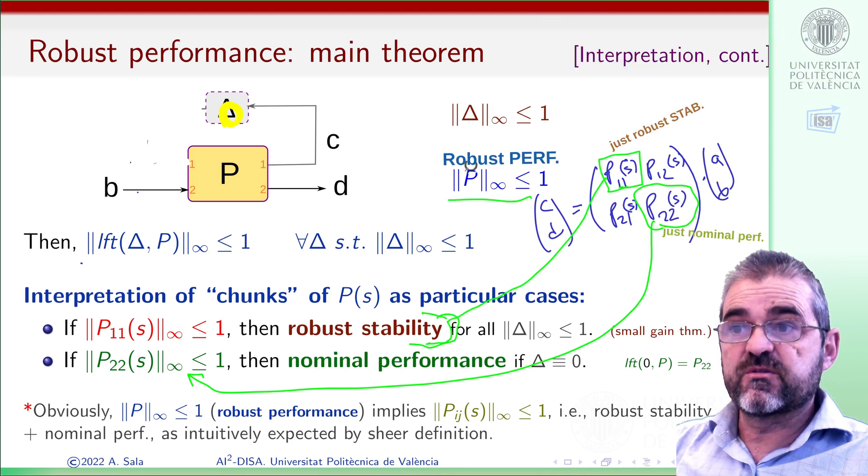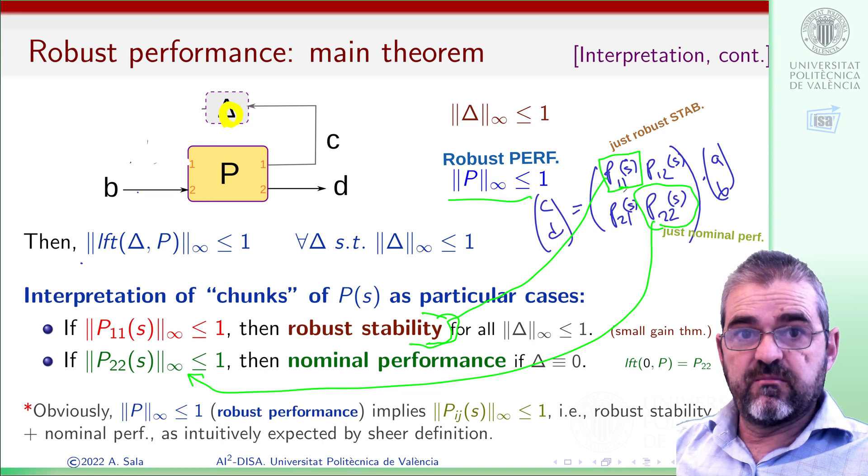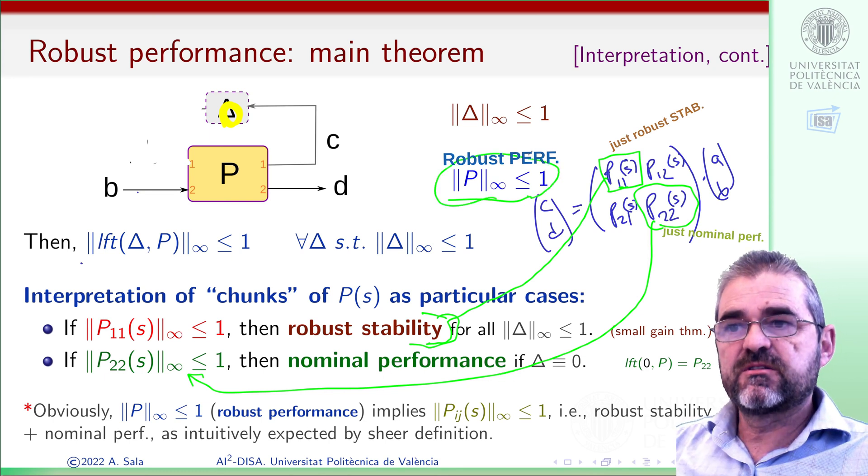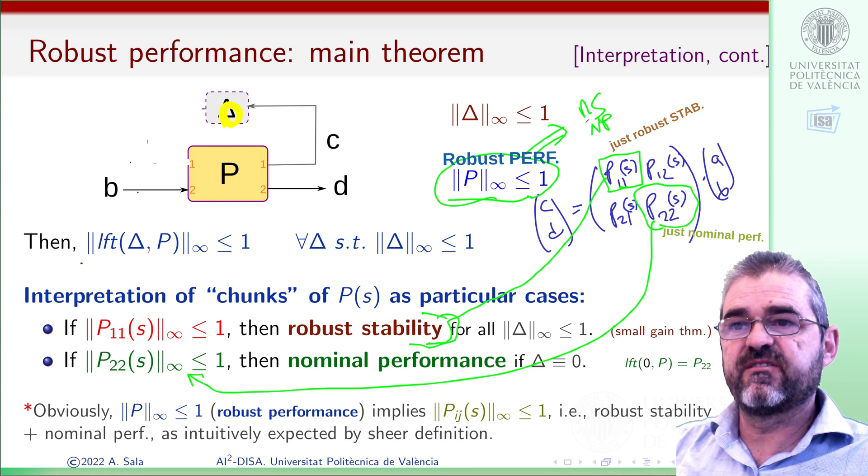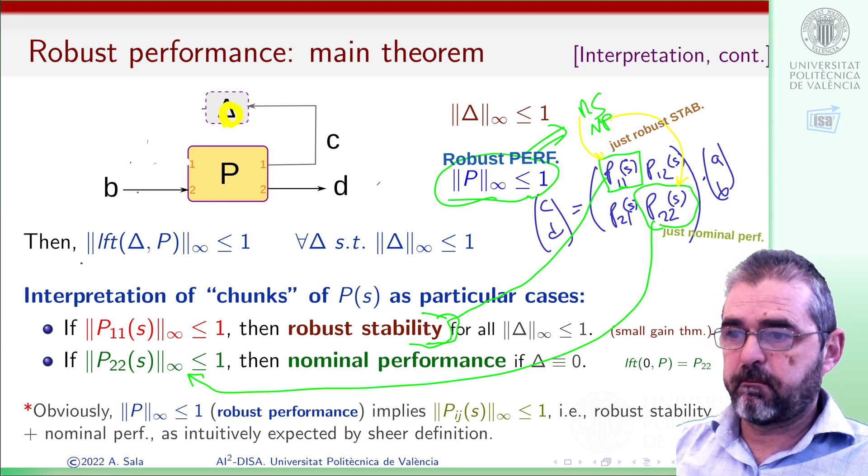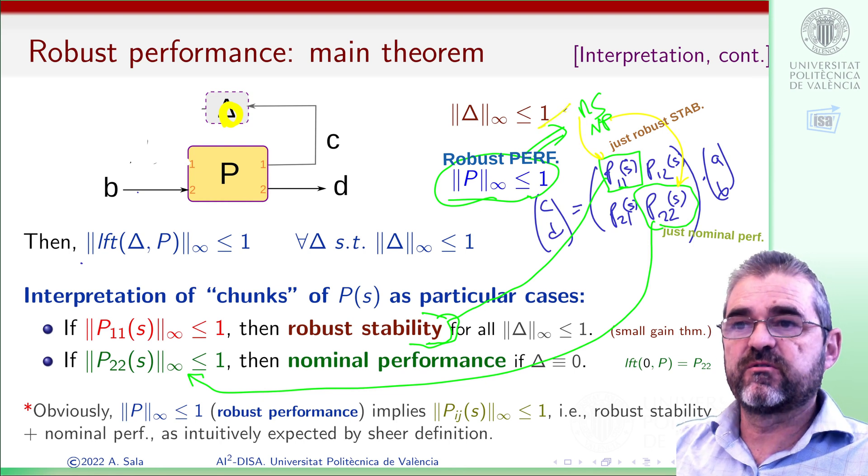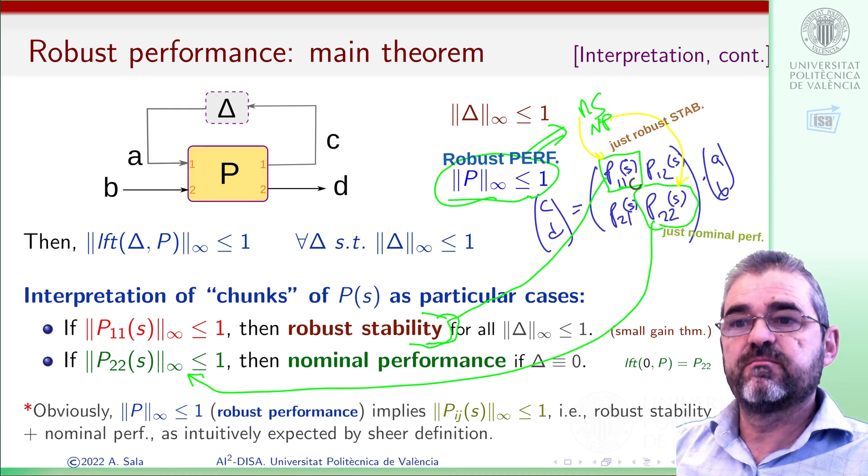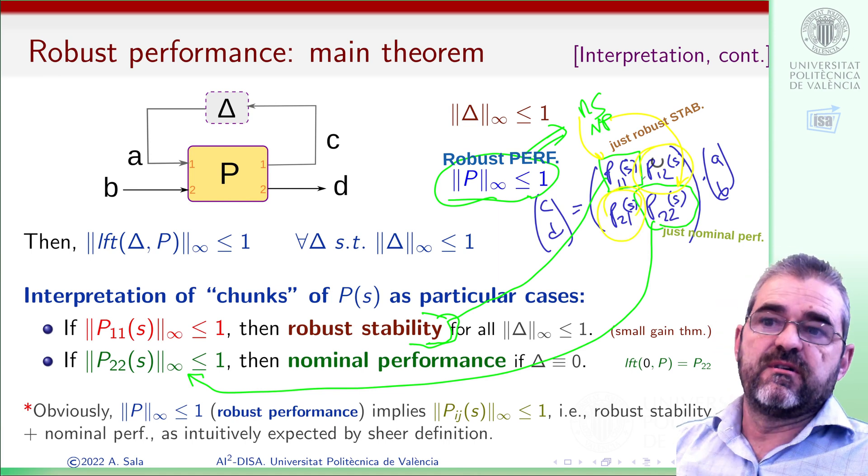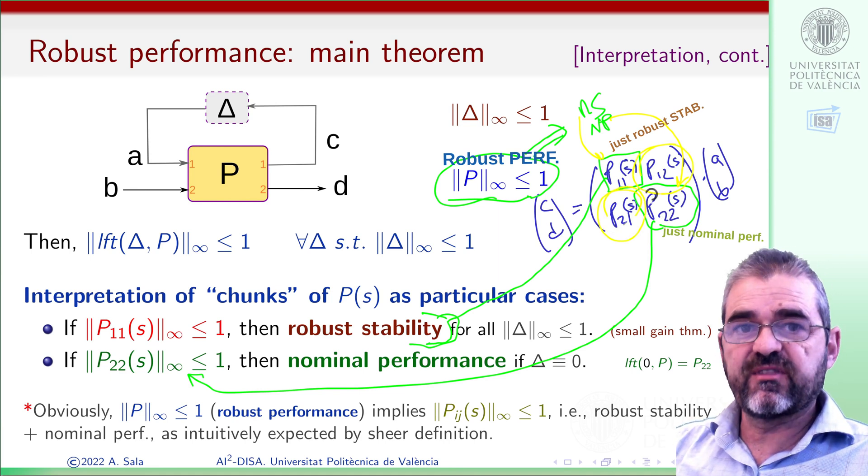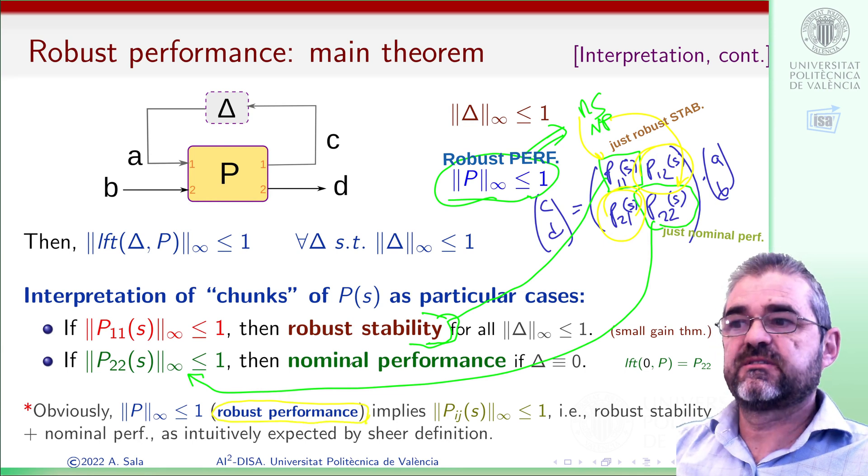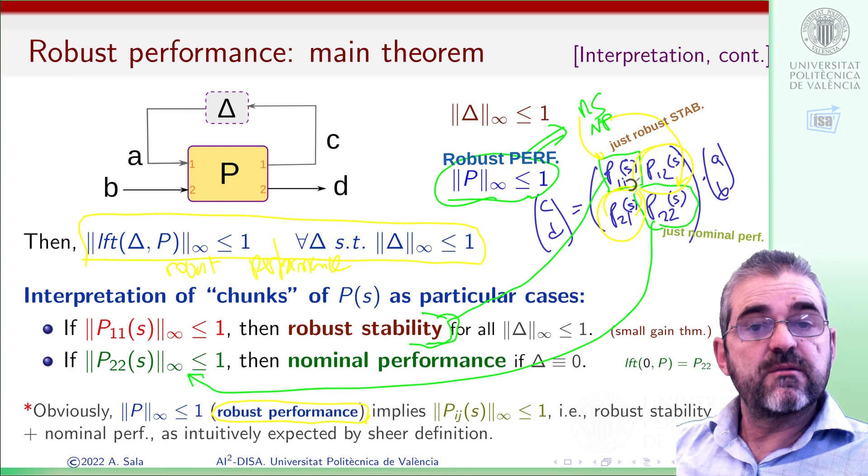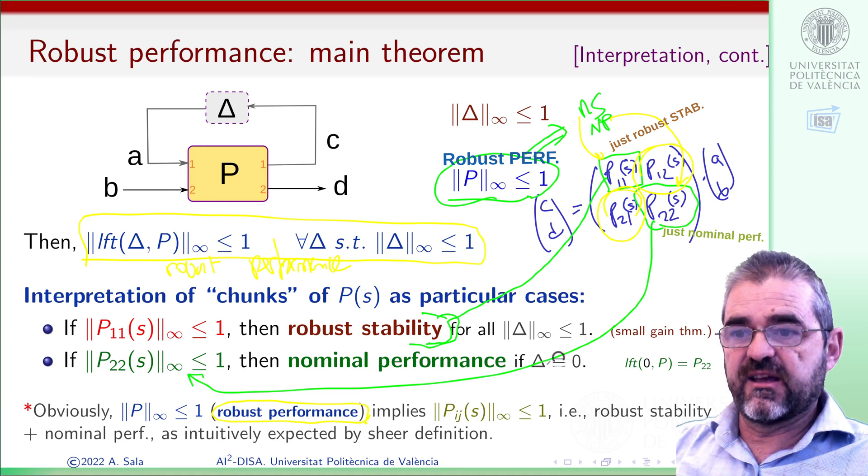So at the end, this condition is more stringent than having both robust stability and nominal performance. If this holds, then we have robust stability and nominal performance because they refer to the diagonal elements of this matrix. But the converse, of course, is not true. So we need extra conditions on the interaction between the 1-1 and 2-2 elements and the hopefully small size of the off-diagonal elements to prove robust performance, which is more difficult to prove than a separate independent analysis of the meaning of each of the diagonal elements.